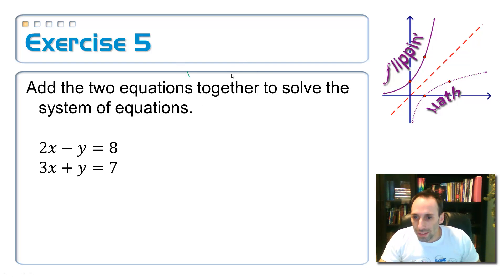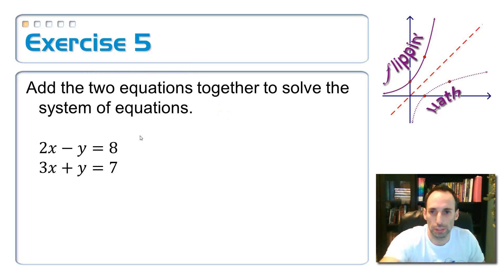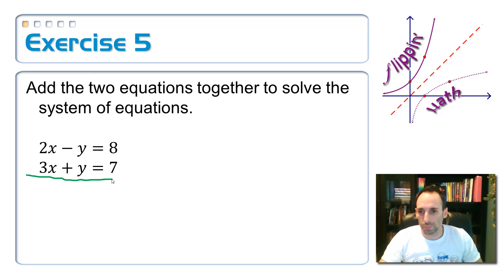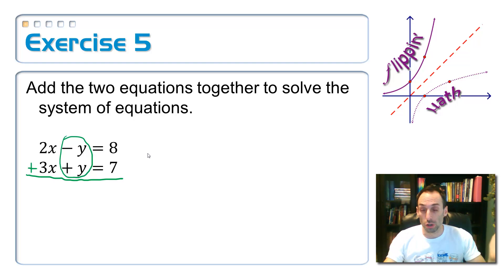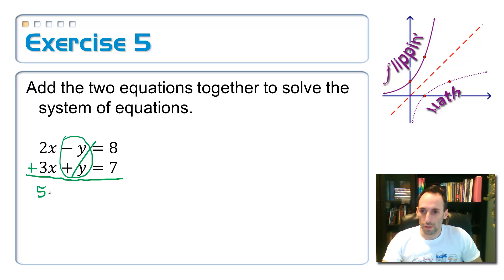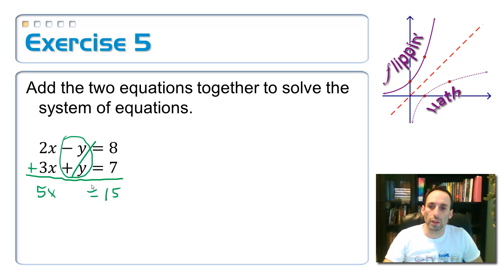If I just add them together — let's clean that up a little bit — you can see that the y's here are exact opposites. It's like the matter and the antimatter. When I add them together, they're going to disappear. They're going to annihilate — they're just going to disappear, they're gone. And I get 5x is equal to 15, a very simple equation that I can solve for the other variable because I've eliminated y.